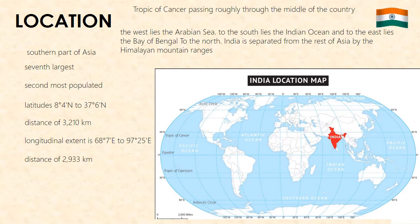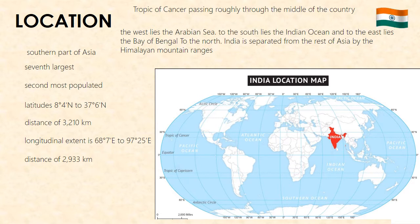India is surrounded by oceans or seas on three sides. To the west lies the Arabian Sea, to the south lies the Indian Ocean, and to the east lies the Bay of Bengal. To the north, India is separated from the rest of Asia by the Himalayan mountain ranges.